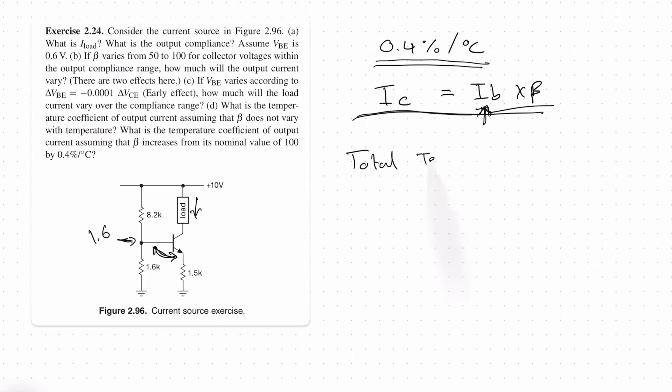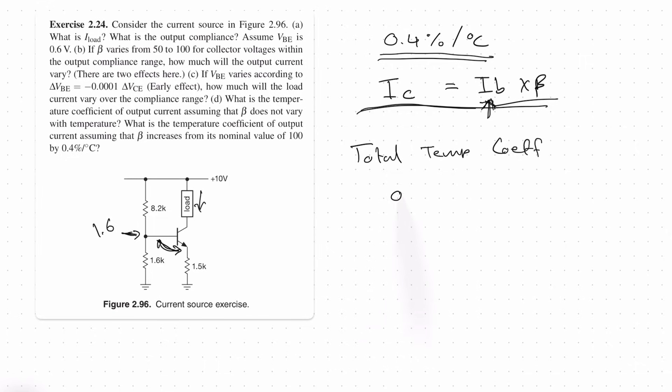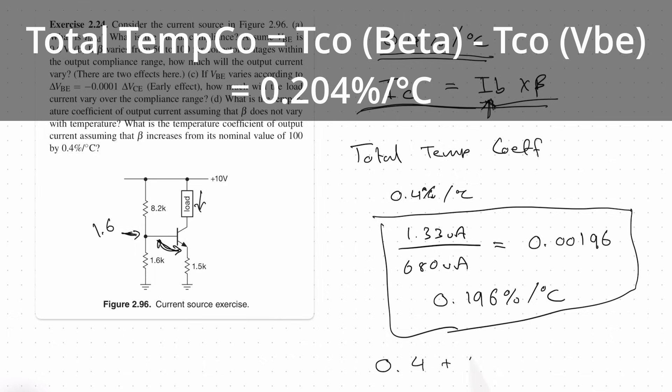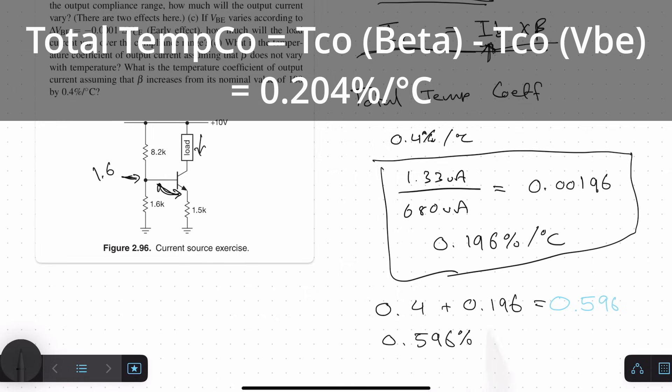So the total temperature coefficient is going to be the temperature coefficient from the first part of this question, plus the temperature coefficient of the beta change as well. So the beta change is 0.4% per degree C. So for the first part, we should turn that into a percentage value. So we had 1.33 microamps divided by 680 microamps, which gives us 0.00196. And if you multiply that by 100, we get 0.196% per degree C from our previous answer. We can add this to this number over here. So the final answer is going to be 0.4 plus 0.196, which is equal to 0.596% per degree C.